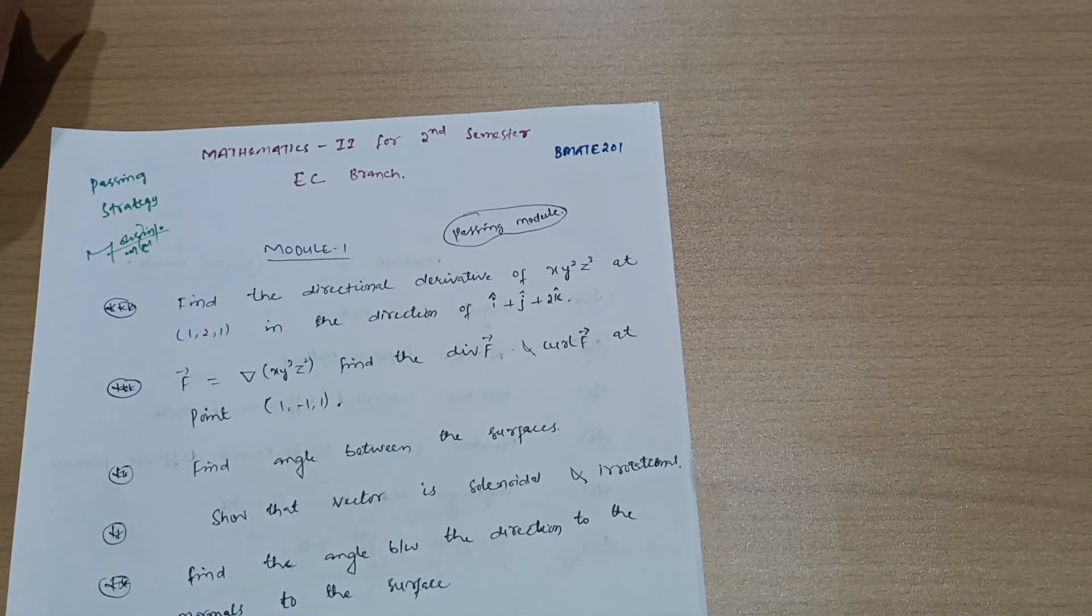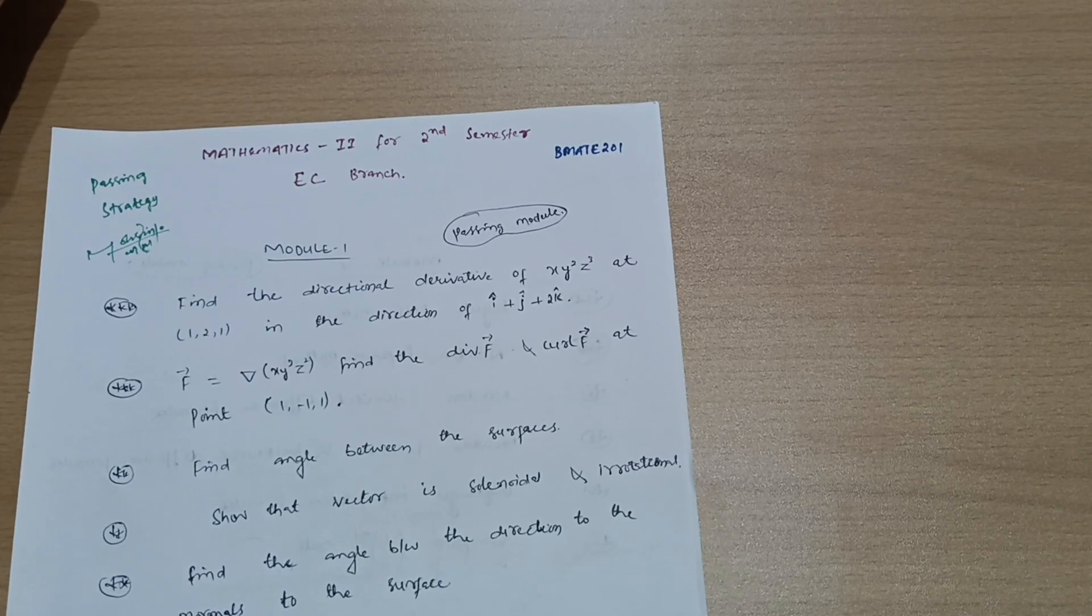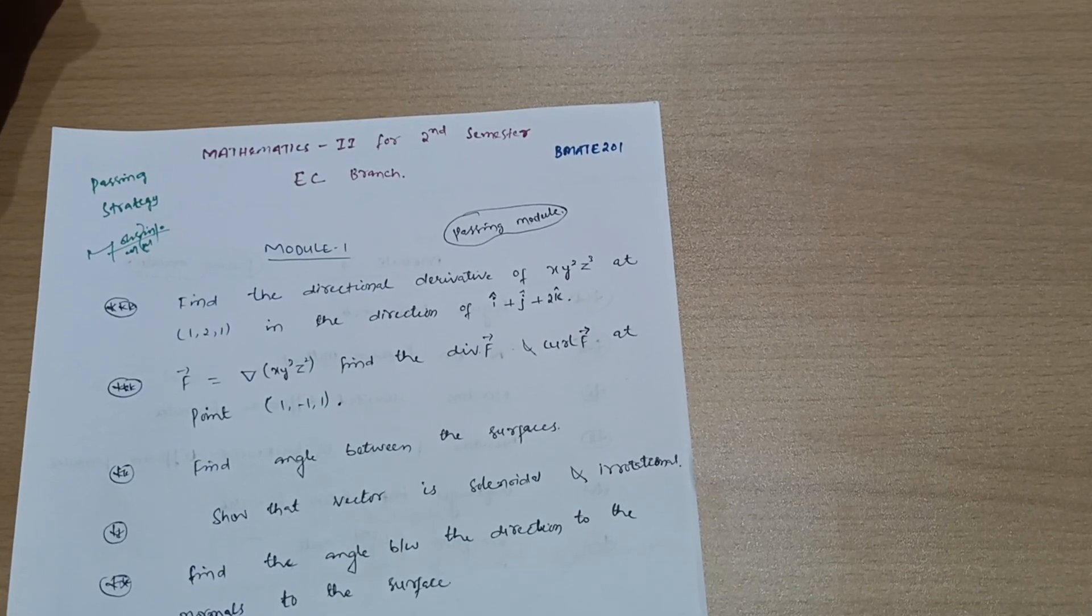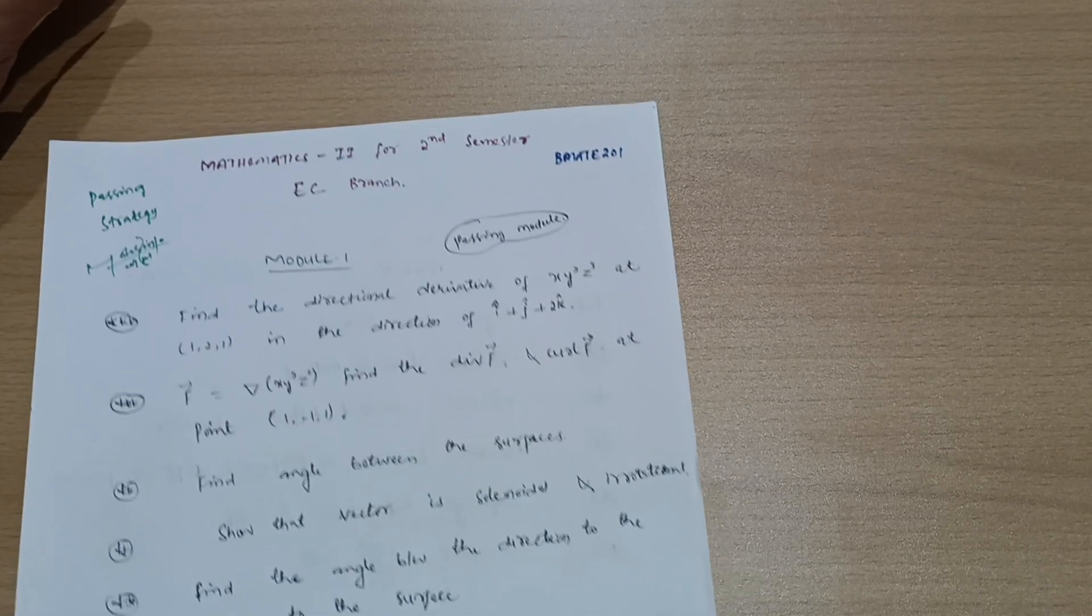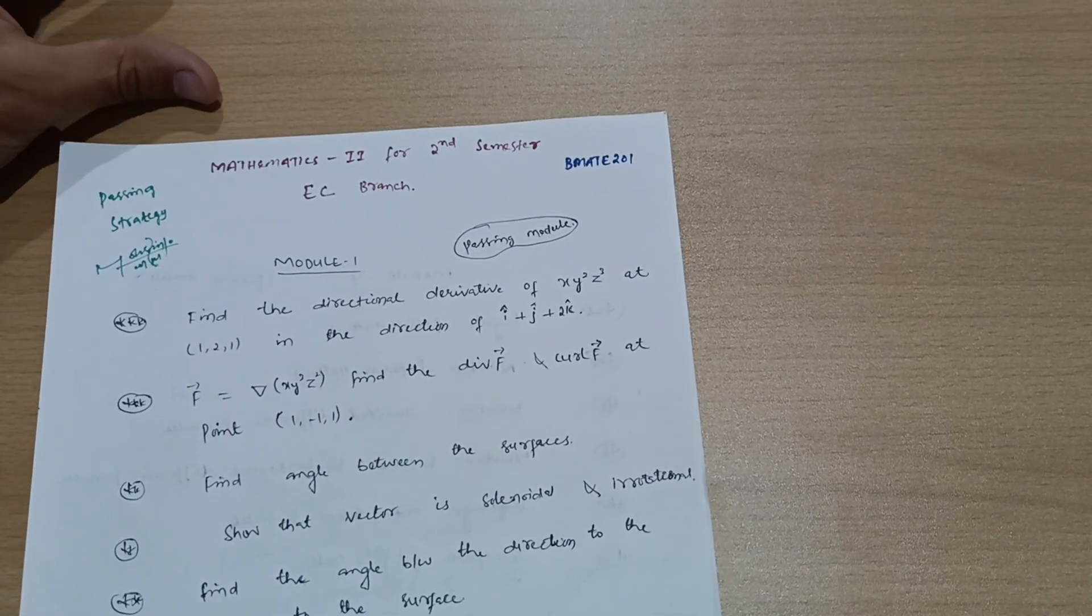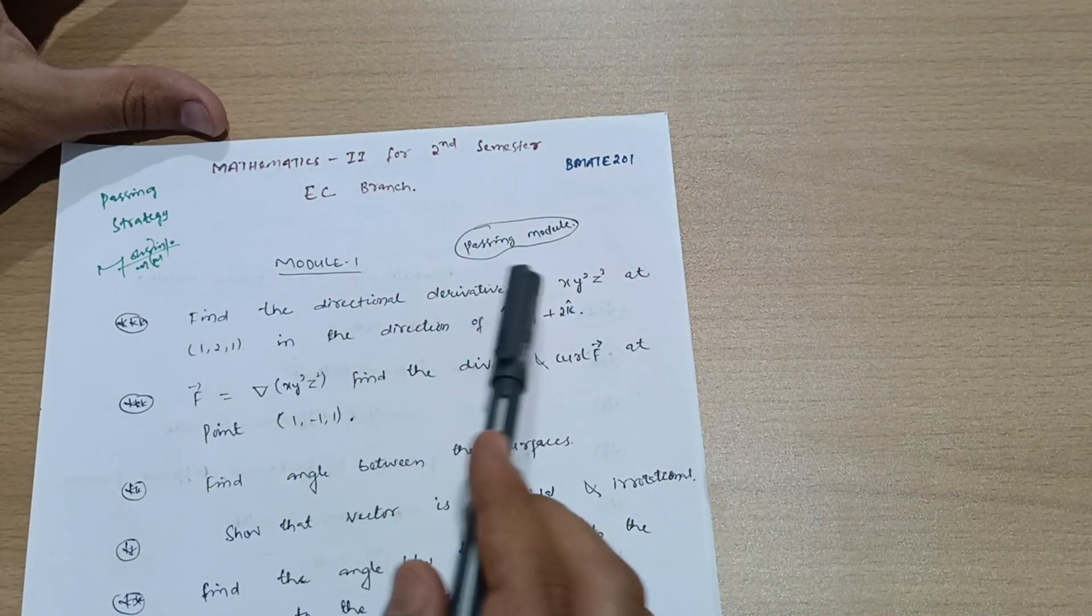You already know that in VTU examinations, backlog papers are much tougher than regular papers, so you should cover the subjects in the first attempt itself. Today I am with Mathematics-II for EC branch students - the passing strategy. Let me discuss the passing modules.